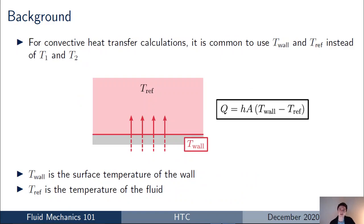Now if we take Newton's law of cooling and apply it specifically to convective heat transfer calculations — so calculations involving fluids and CFD — it's more common rather than using T1 and T2 to use T_wall and T_ref for the two temperatures. T_wall is the temperature of the solid wall and T_ref is the temperature of the fluid, which we're going to talk about in more detail as we go through this talk.